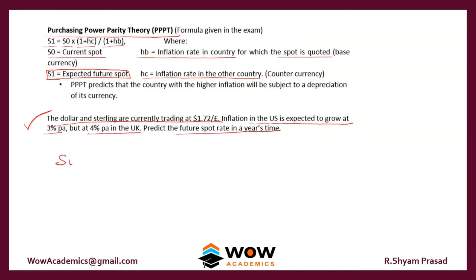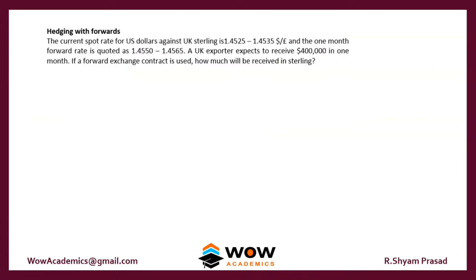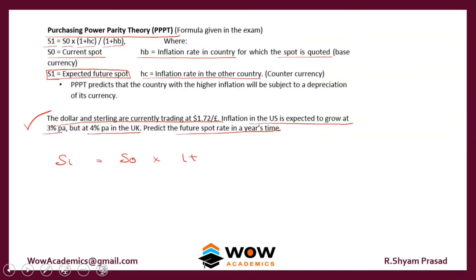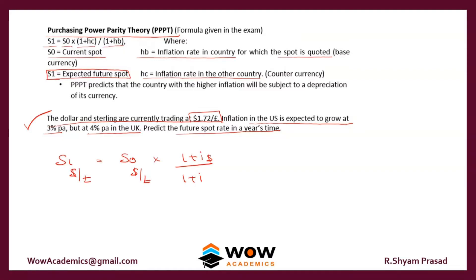We set up the formula: S1 = S0 × (1 + hc) / (1 + hb). The key concept here is to first look at what the parity is — it is dollar to the pound. So the spot rate number is given in dollars to the pound, meaning the inflation rate in the numerator should be the dollar (US) rate and the denominator should be the pound (UK) rate.